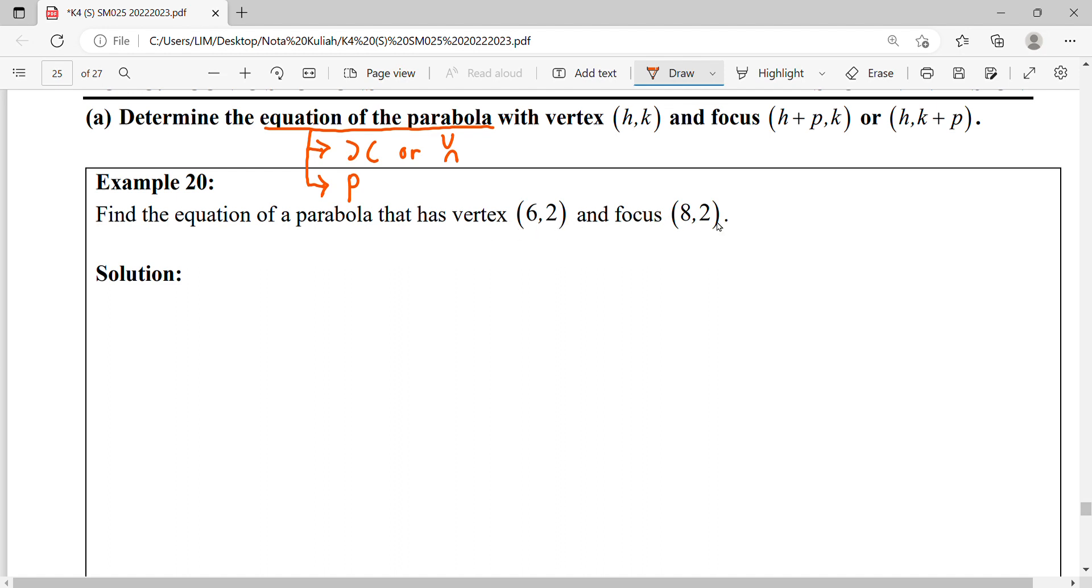We'll sketch this parabola. This is our vertex at (6,2), and the focal point will be at (8,2). As we know, the focal point will be inside the concavity of our parabola.